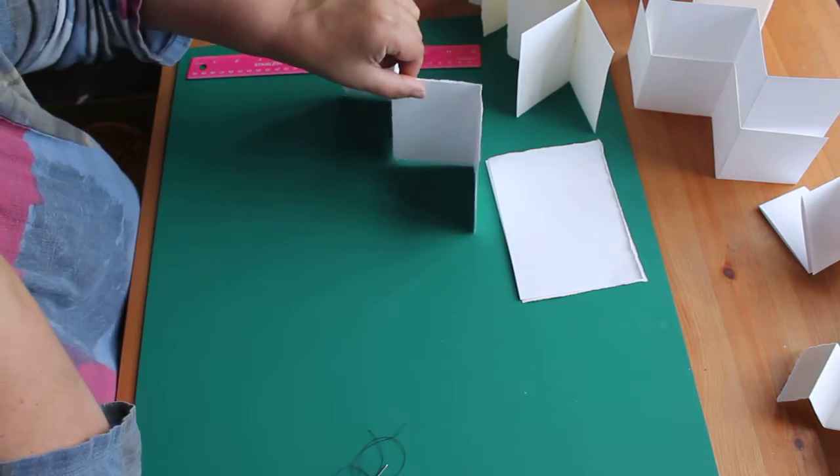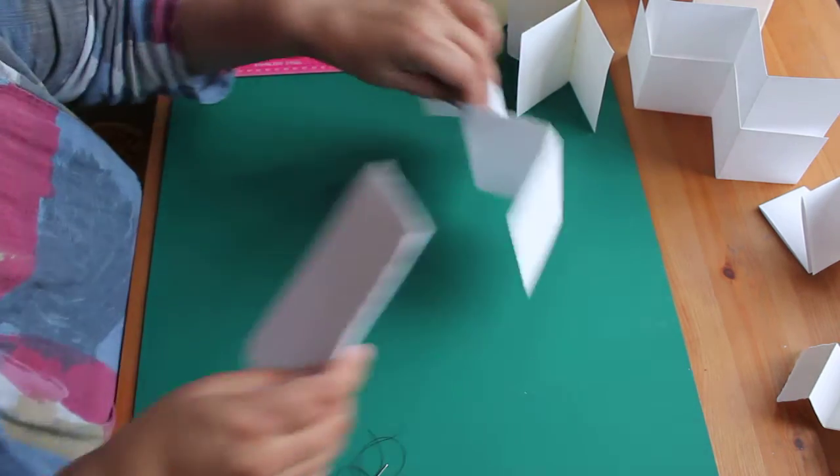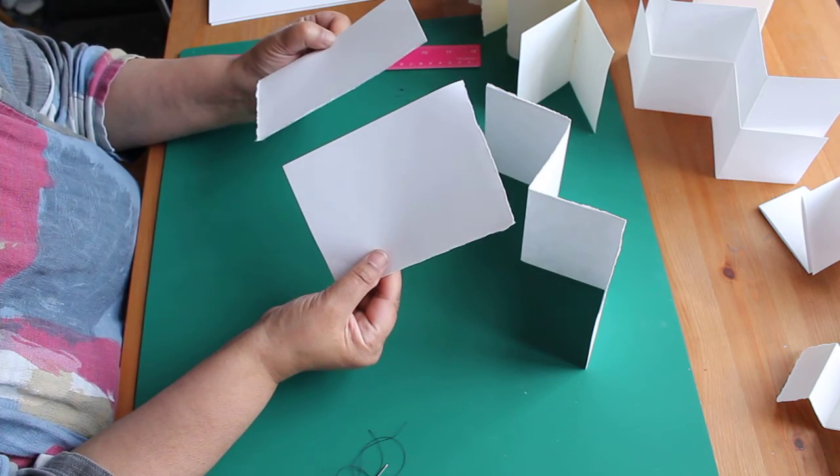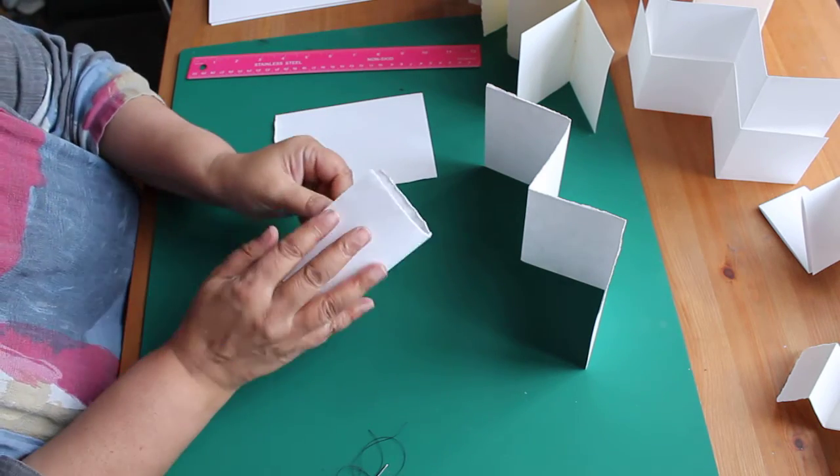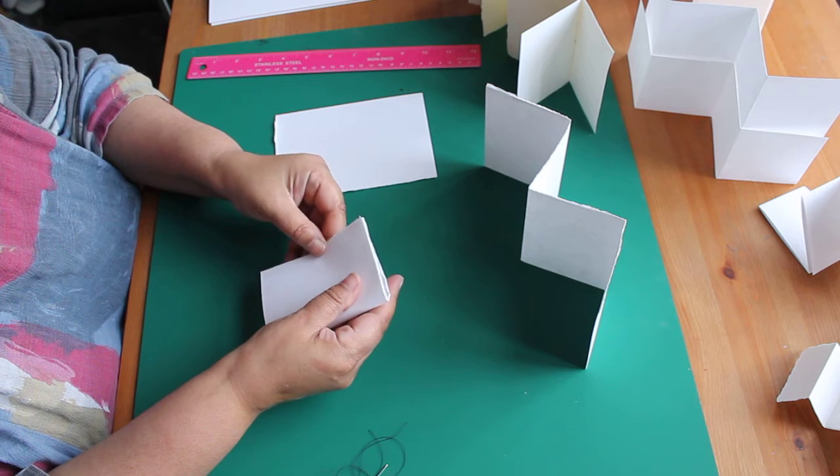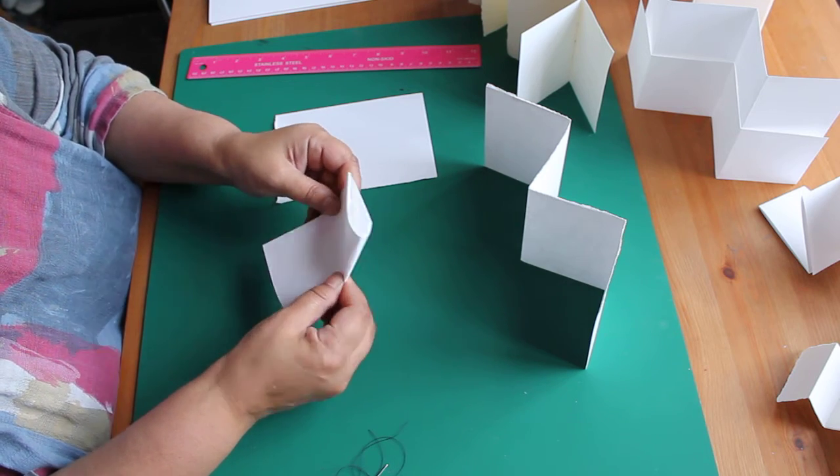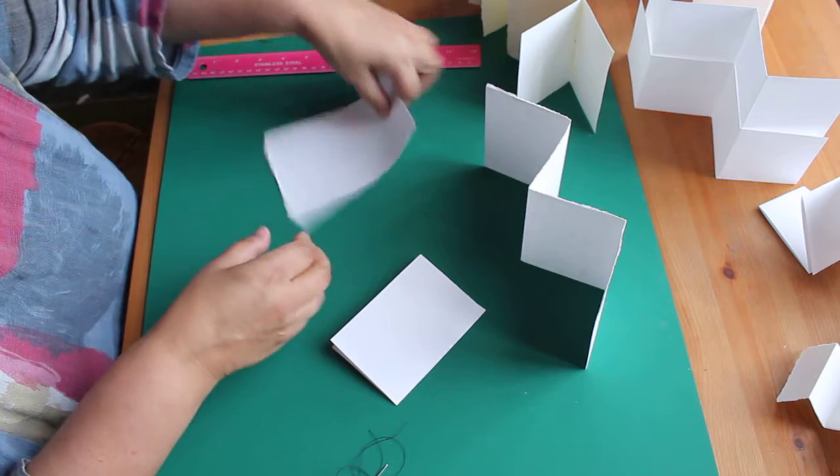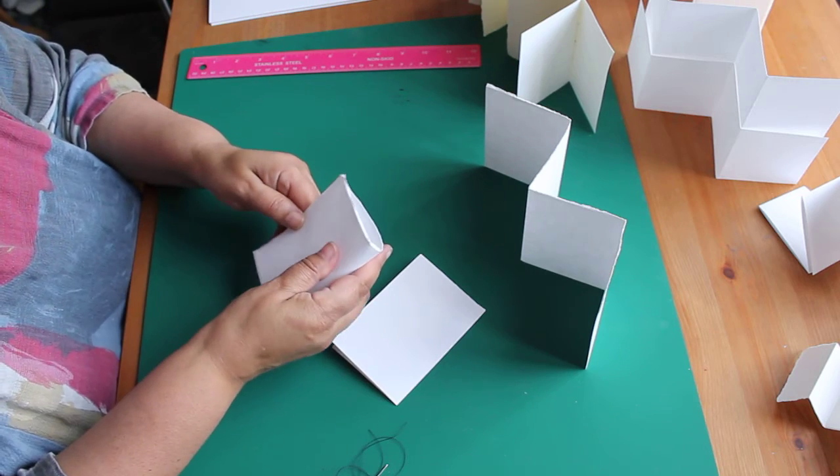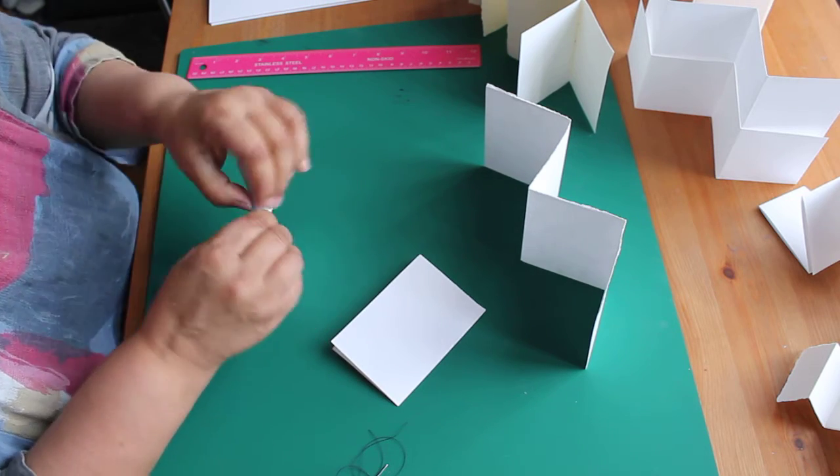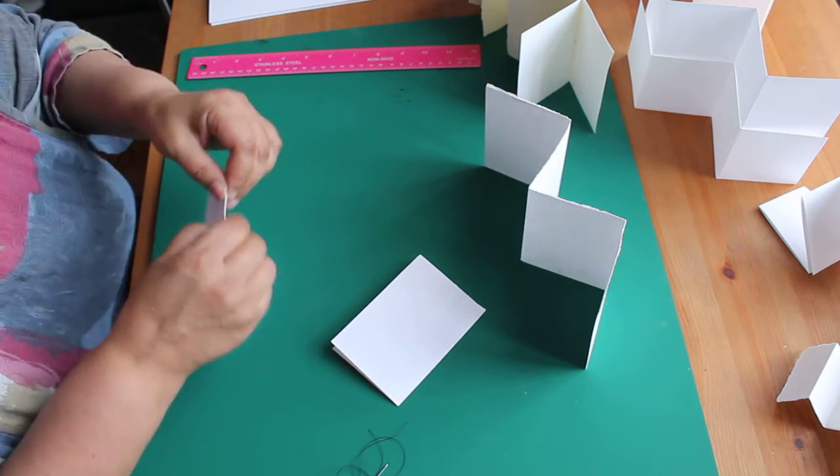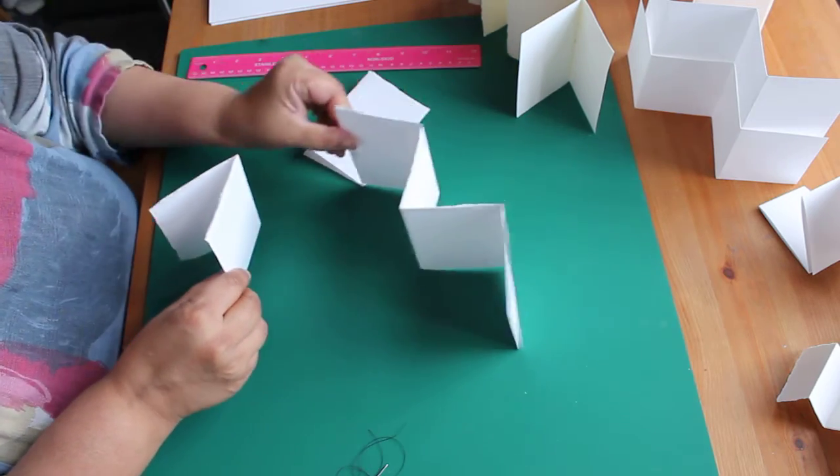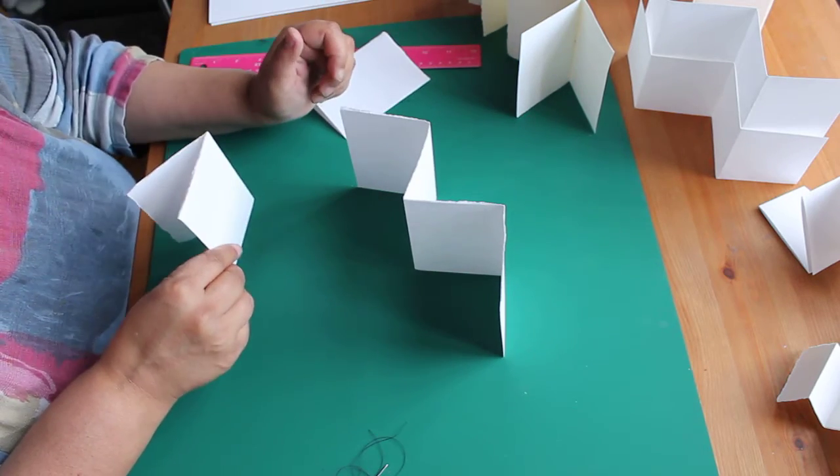So keeping that structure to one side, take those two pages that we had before. Fold each of them in half. Fold each of them in half. And we're going to stitch these into the concertina structure.